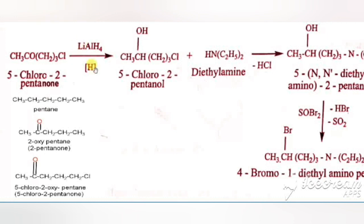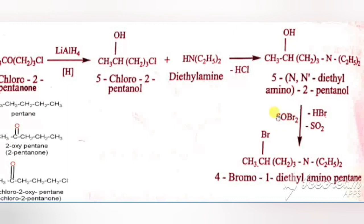The alcohol reacts with diethylamine — HCl is eliminated, and the diethylamino group (N(C2H5)2) is added to that carbon. This then undergoes bromination by thionyl bromide (SOBr2): oxygen combines with SO and is removed as SO2, and the hydrogen combines with Br and is removed as HBr, leaving Br attached to that carbon. The product is named 4-bromo-1-diethylaminopentane.